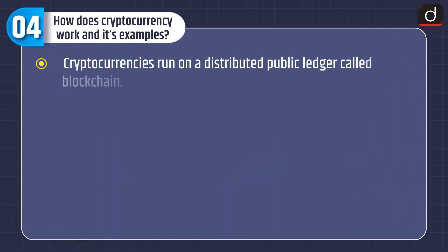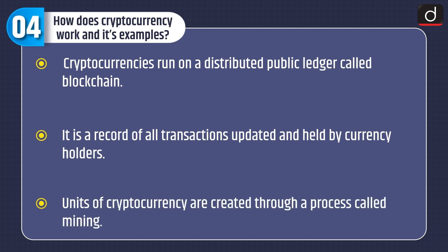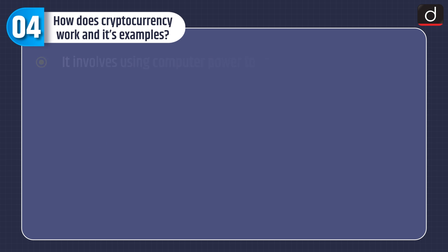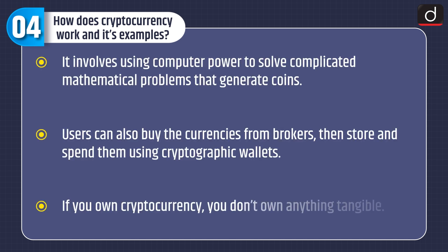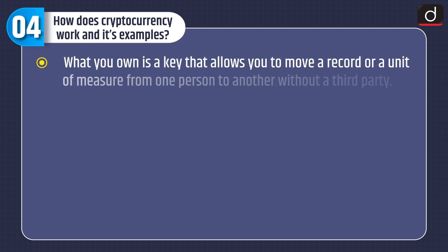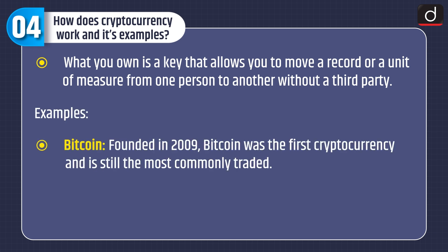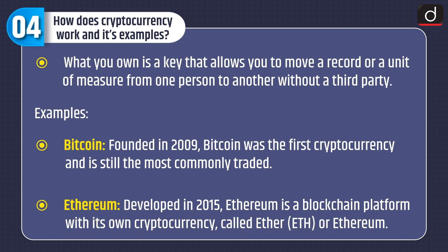Now let's understand how cryptocurrency works. Cryptocurrencies run on a distributed public ledger called blockchain — a record of all transactions updated and held by currency holders. Units of cryptocurrency are created through a process called mining, which involves using computer power to solve complicated mathematical problems that generate coins. Users can also buy currencies from brokers, then store and spend them using cryptographic wallets. If you own cryptocurrency, you don't own anything tangible — what you own is a key that allows you to move a record or unit of measure from one person to another without a third party.